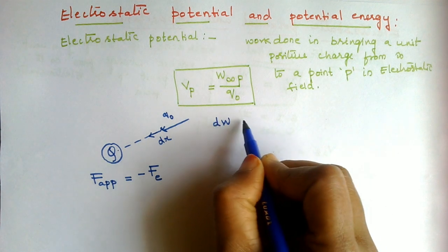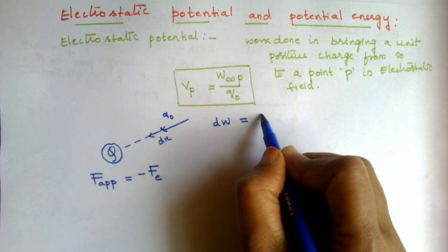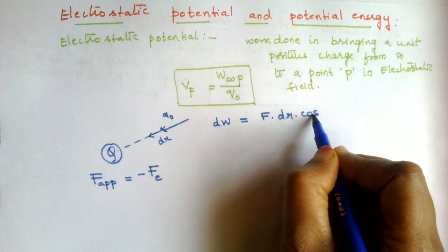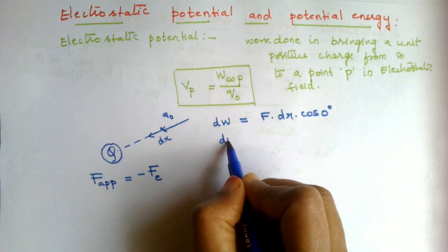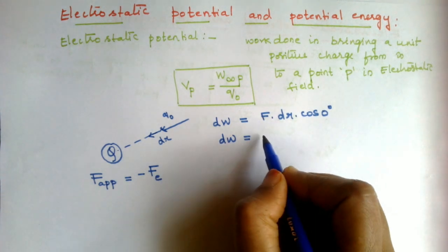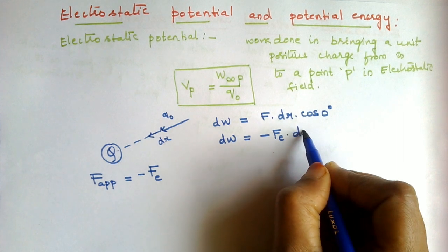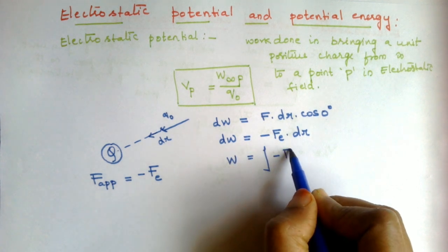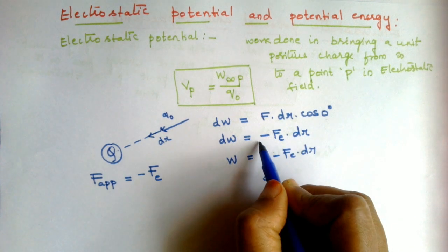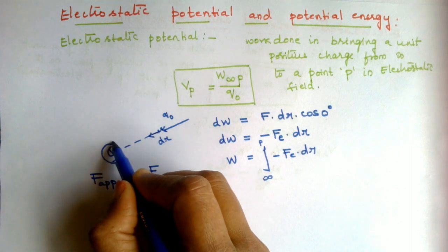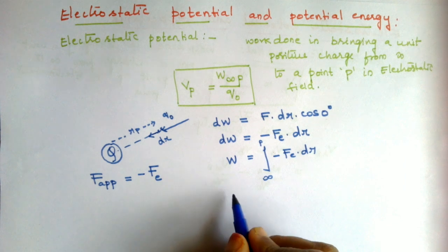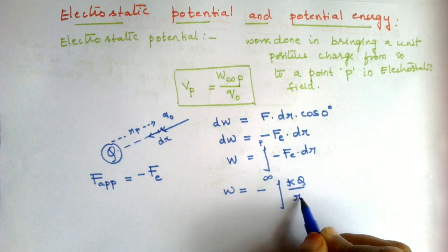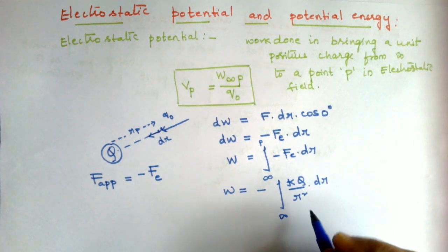A small amount of work done dW in moving the charge through a small displacement dr is: force into displacement, with cos 0° = 1 since both are in the same direction. So dW equals minus Fₑ dr. The total work done is the integral of minus Fₑ dr from infinity to point P, which is at a distance rP from the source charge.